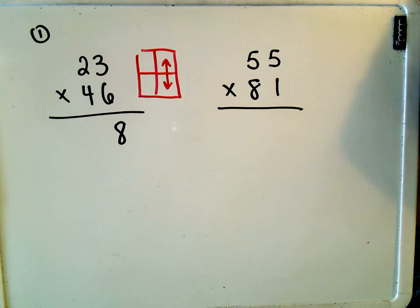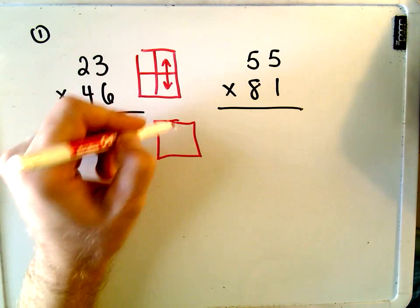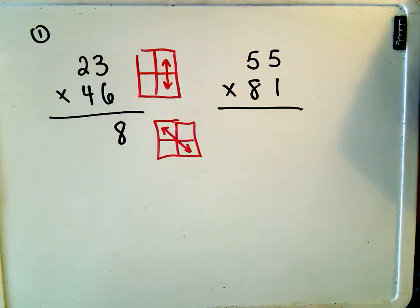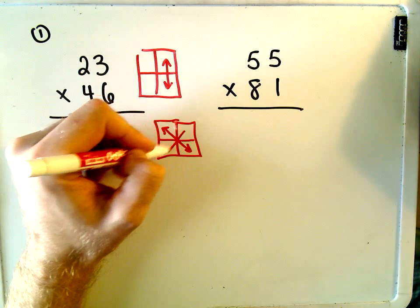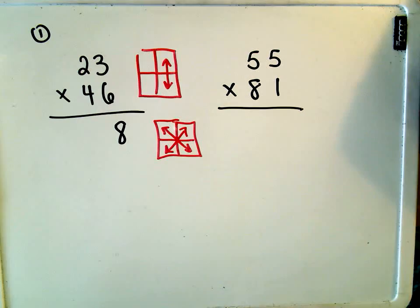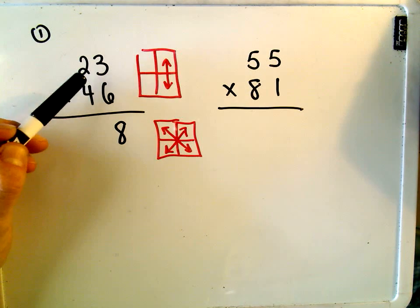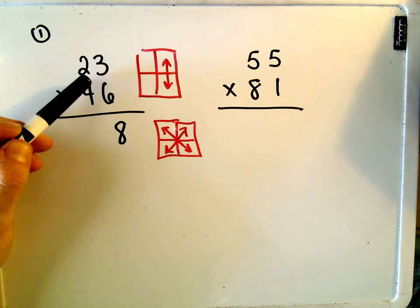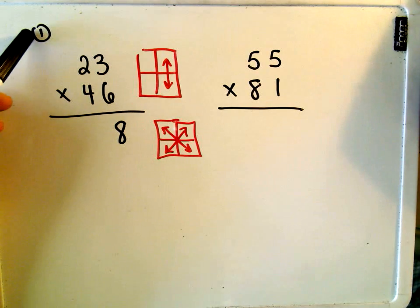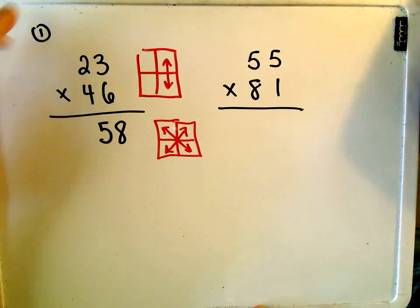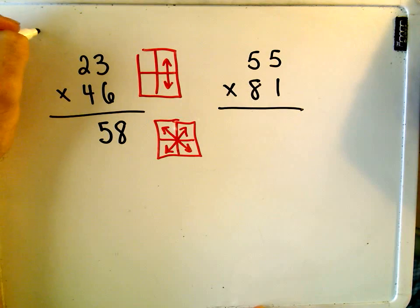The second step I do is I basically multiply the top left number by the bottom right number, and then I multiply the bottom left number by the top right number, and I add them. So I take 2 times 6, which is 12, 4 times 3, which is 12. Well, 12 plus 12 is 24. You have to add the 1, so that'll give you 25. We drop the 5 down and now we carry the 2.